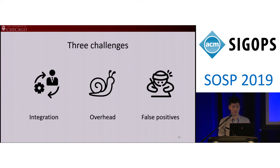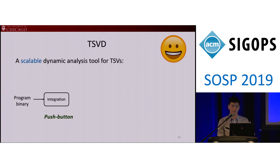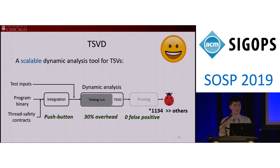To address those three challenges — integration, overhead, and false positives — we designed TSVD, a scalable dynamic thread safety violation detection tool. Using TSVD is very easy. It does not need to know what type of concurrency exists in the program, nor does it require knowledge about synchronization primitives. You only need to provide the thread safety contract, then push a button to run the program with any test inputs. When the test run finishes with only 30% overhead, thread safety violations will be reported with zero false positives. We deployed TSVD at Microsoft and so far it has found more than 1,000 thread safety violations — more than alternative techniques can find even given more time to run.